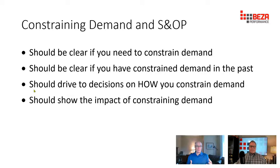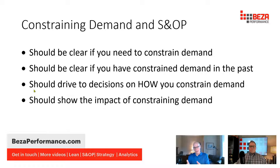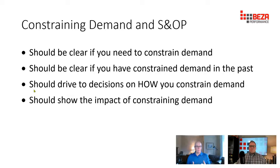The third thing: the S&OP process should drive to decisions on how you constrain demand. Constraining demand doesn't just happen in a vacuum — there are actual activities you have to do. If I don't have the product, somebody's not going to get what they want when they want it, and it might be good to decide who that is. Sometimes what's even worse than not getting what they want is not getting what you promised them. The fourth and final point: the S&OP process should show the impact of constraining demand. If you constrain demand, it potentially increases your backlog. You need to see that and the results of those decisions. At a high level, S&OP is about taking control of the business.